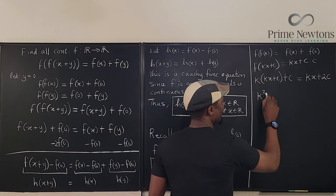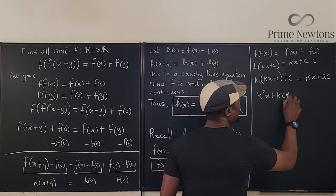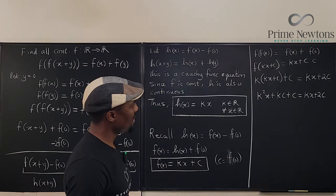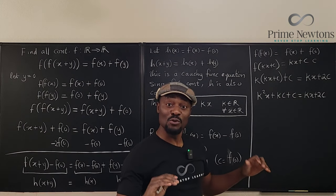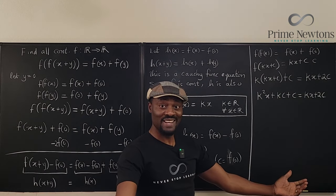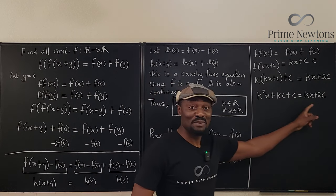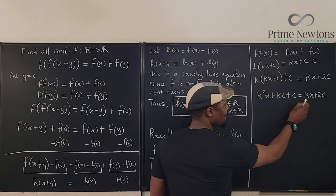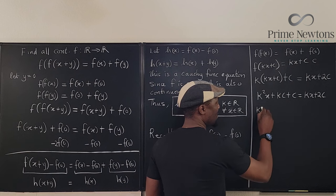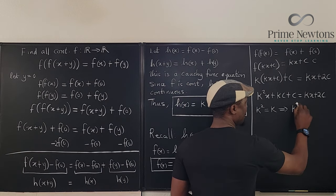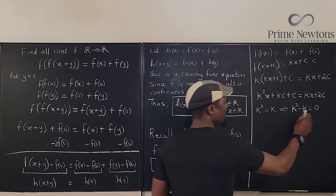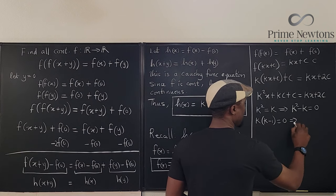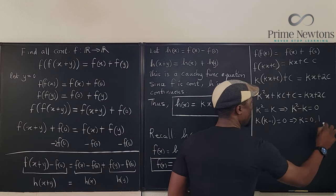So, we're going to get k squared x plus kc plus c equals kx plus 2c. Is that right? Yep. Whenever you have two polynomials equal to each other, then the corresponding coefficients must be equal. So, it is common sense for you to say, this has kx, this has k squared x. So, it means k squared must be equal to k. k squared minus k equals 0. If you solve this, you have k times k minus 1 equals 0, which implies k equals 0 or 1. So, those are the two options of k.